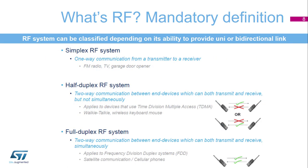RF systems can be classified depending on their ability to provide unidirectional or bidirectional links. The first is the simplex RF system: only one-way communication from transmitter to receiver. Common devices include FM radio, TV, or a door opener. The second is the half-duplex RF system: two-way communication between end devices which can both transmit and receive, but not simultaneously, using time division multiple access. For example, a walkie-talkie.